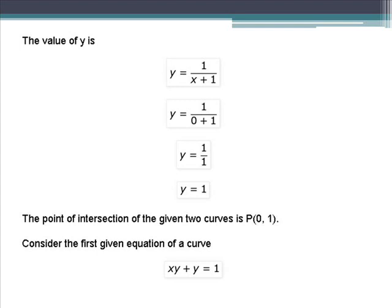Next, we get the value of y. Our equation is y equals 1 over x plus 1. Substituting x equals 0, y equals 1 over 0 plus 1, which gives y equals 1 over 1, or simply 1. Therefore, the point of intersection of the two given curves is (0, 1).